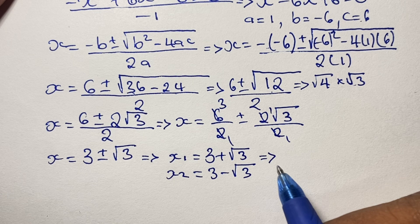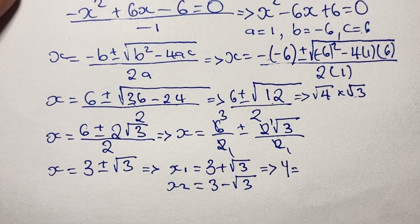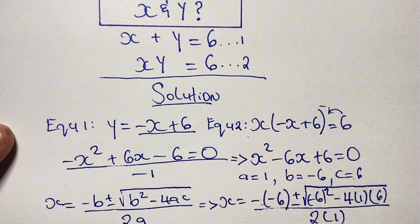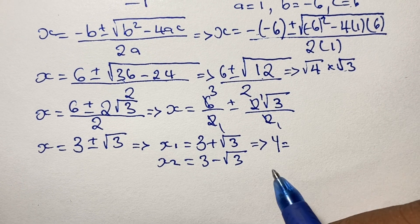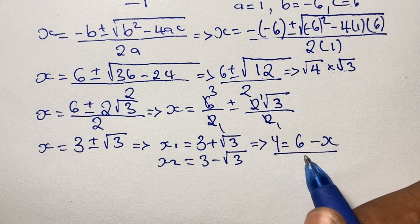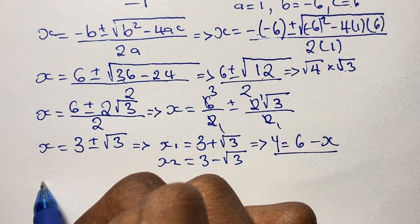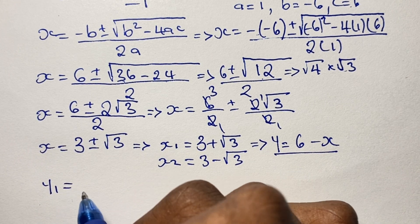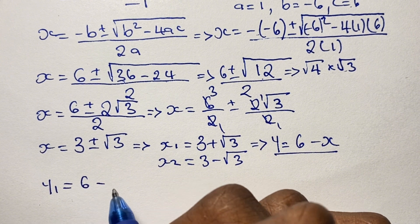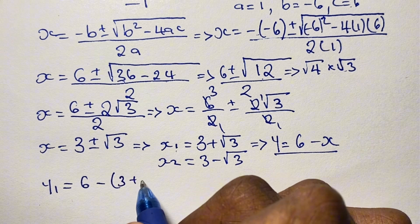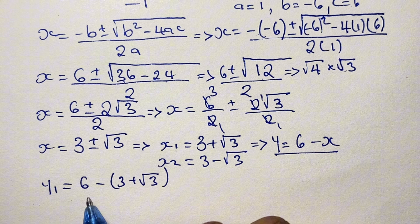Now we have the solutions for x, so we will find the solutions for y. Using what we had earlier, y is equal to negative x plus 6, which we can rewrite as y equals 6 minus x — just rearranging the terms — to make the working easier. For the first solution of y, we use y equals 6 minus x₁, where x₁ is 3 plus the square root of 3. So y equals 6 minus (3 plus the square root of 3).